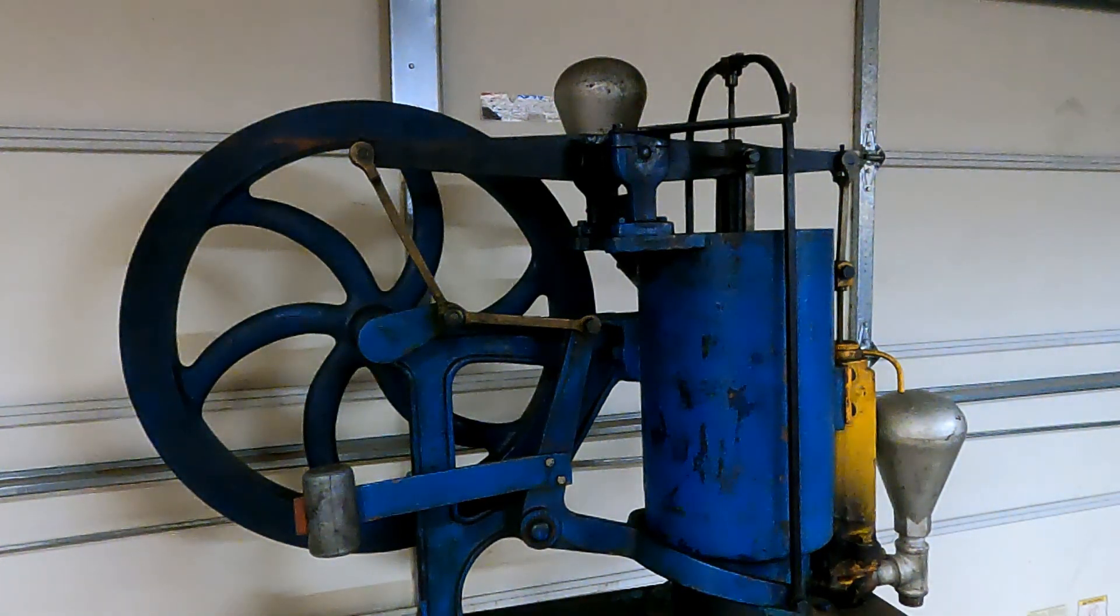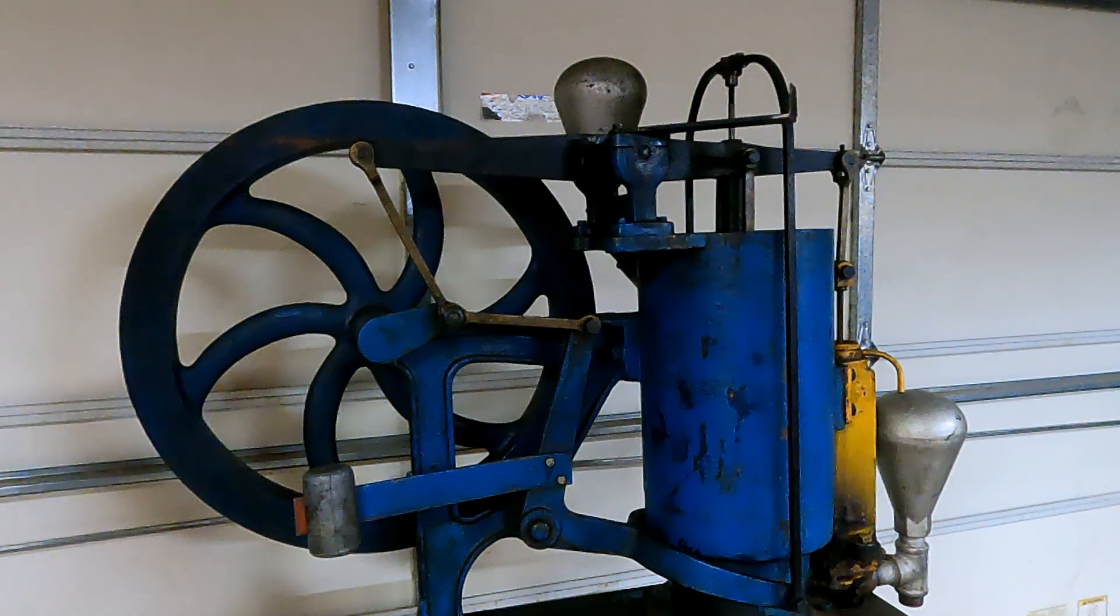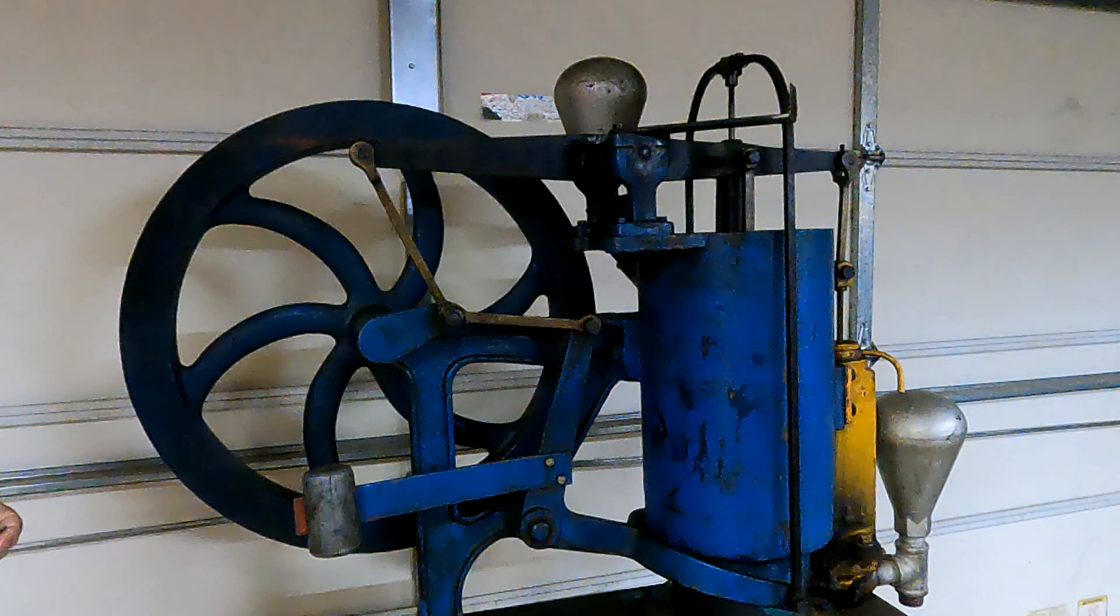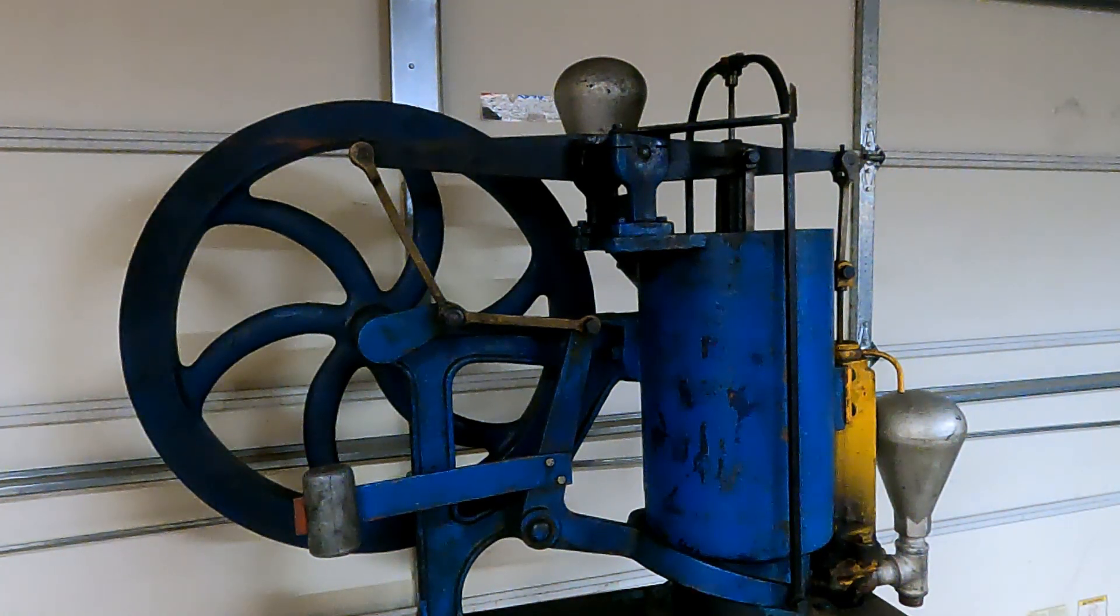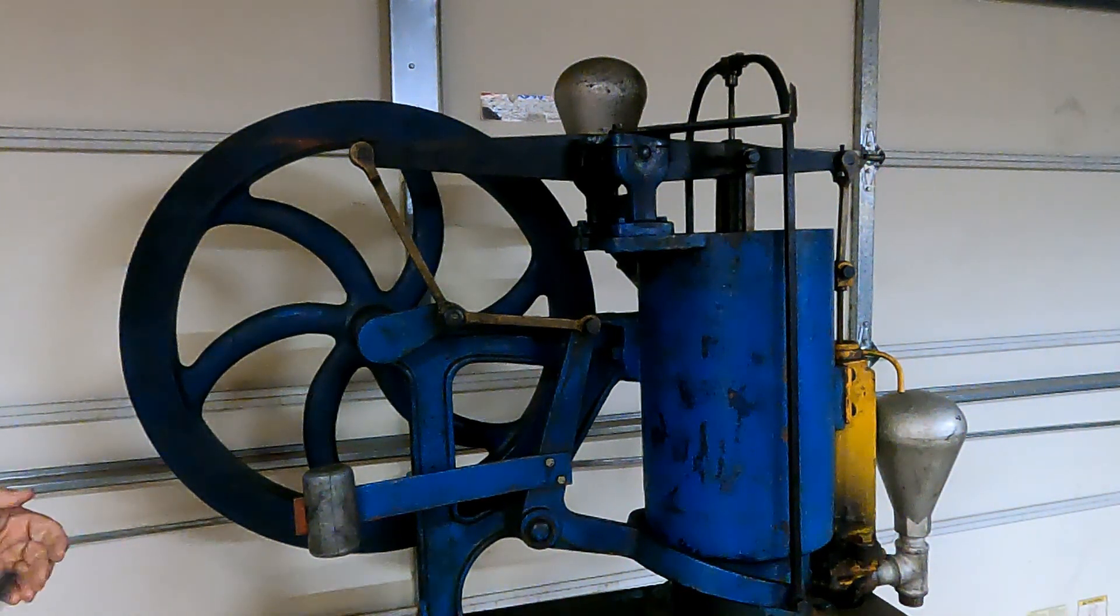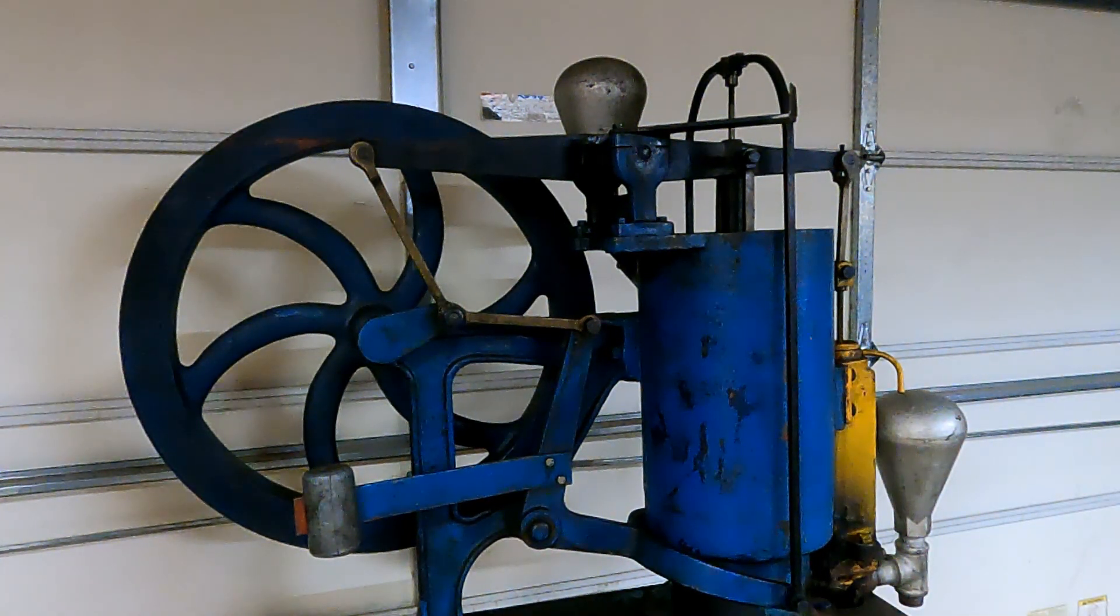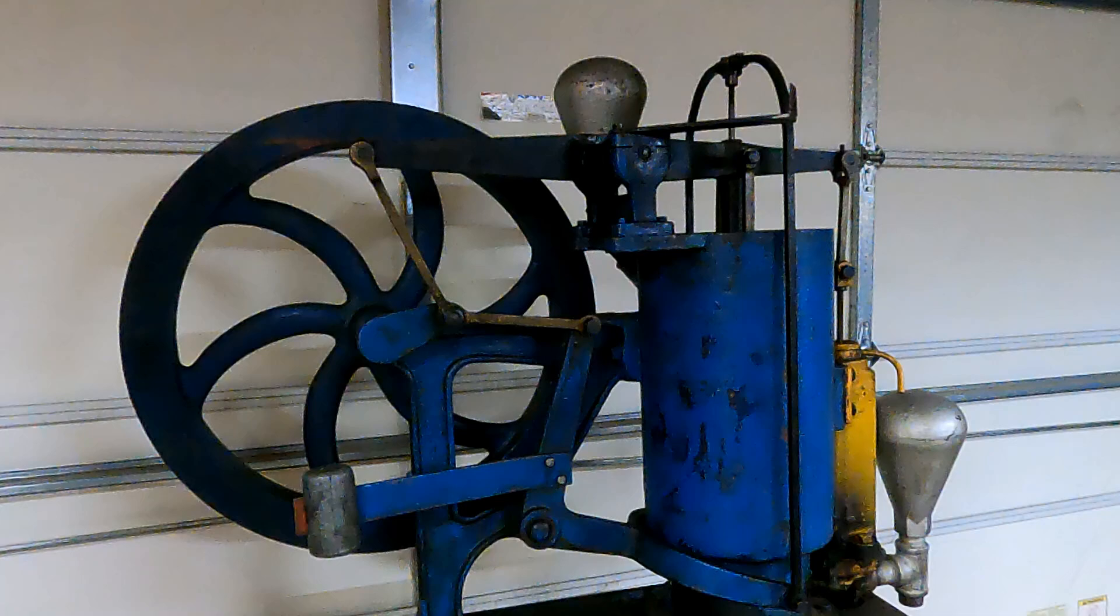The flywheel is 29 inches in diameter and it is an 8-inch engine, which means that the power piston is 8 inches in diameter. It maybe makes half a horsepower at about 80 RPM, so real low RPM, real low power output.